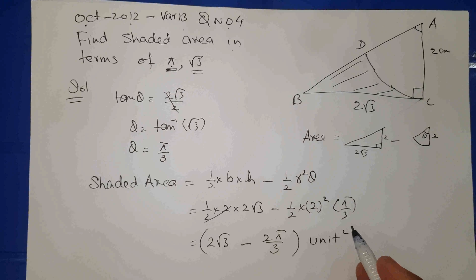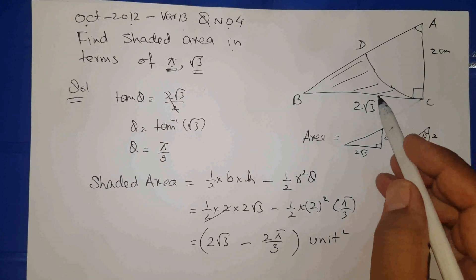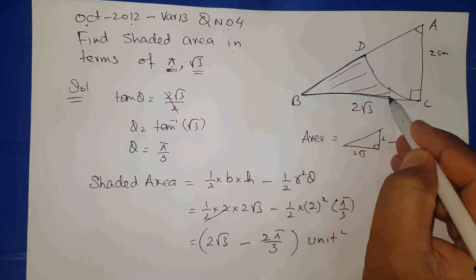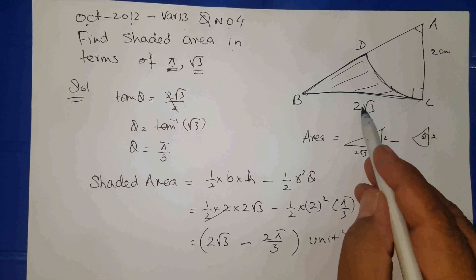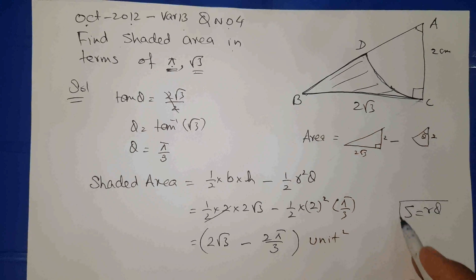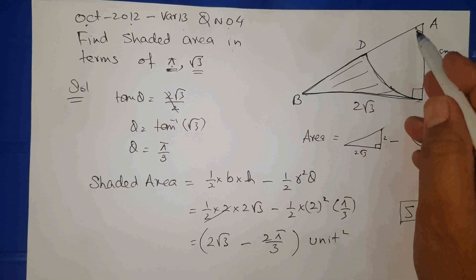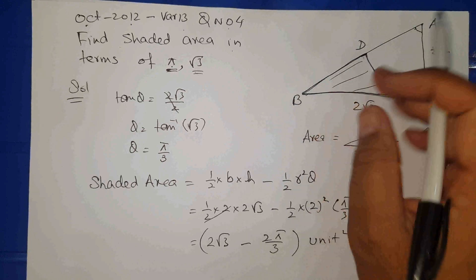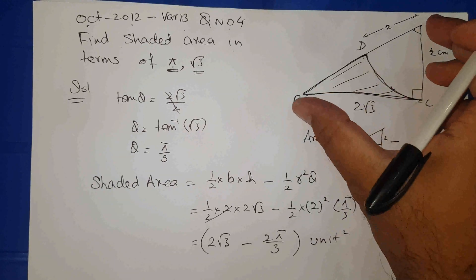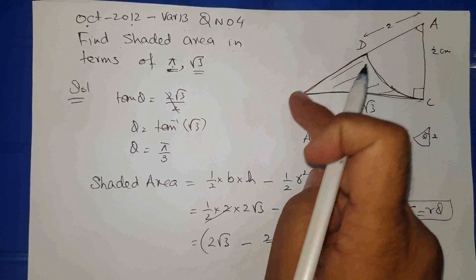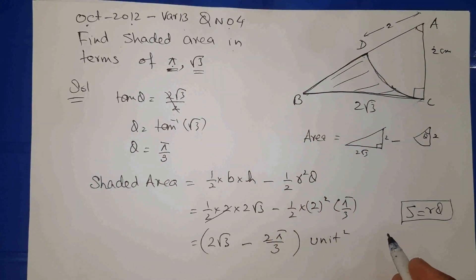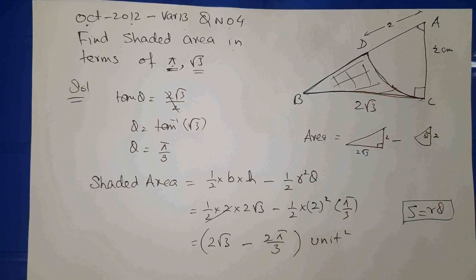If asked for the perimeter of the shaded portion, it is this length plus this length plus the arc length. The given side is known, the arc length is found by S = r θ, and the remaining length is found using Pythagoras theorem on the triangle — subtracting 2 (the radius) from the full hypotenuse gives that segment. Adding these three gives the perimeter of the shaded portion. That is enough for today. Assalamualaikum.